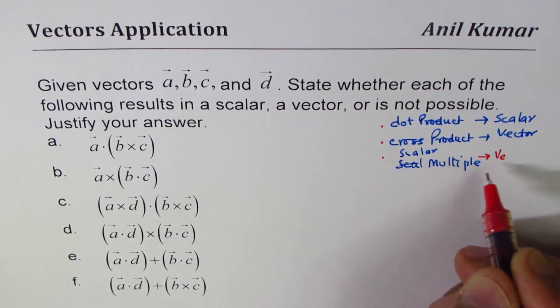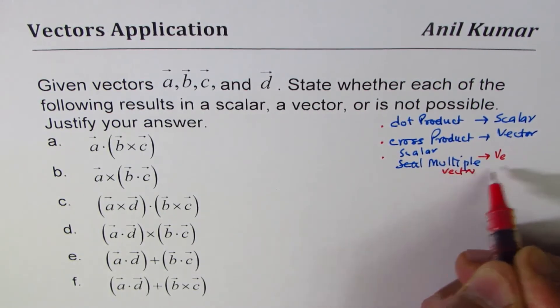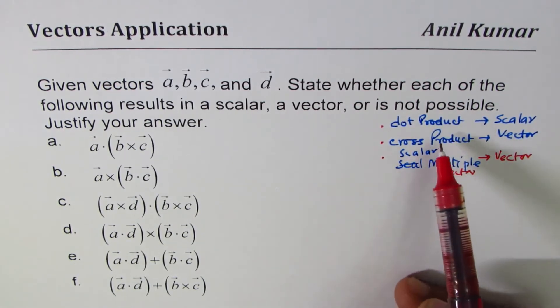A scalar multiple of a vector gives a vector. So that is the result. Now these operations are performed - dot product between two vectors, cross product also between two vectors, correct? Now let's analyze.